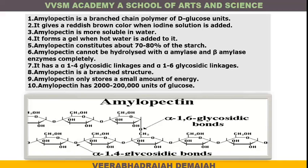This is a beautiful amylopectin structure — you can see the bond and the oxygen bridge. This is the 1,4 glycosidic bond, and this is the branched chain. Here from this long chain, branching occurs with 1,6 glycosidic bonds.